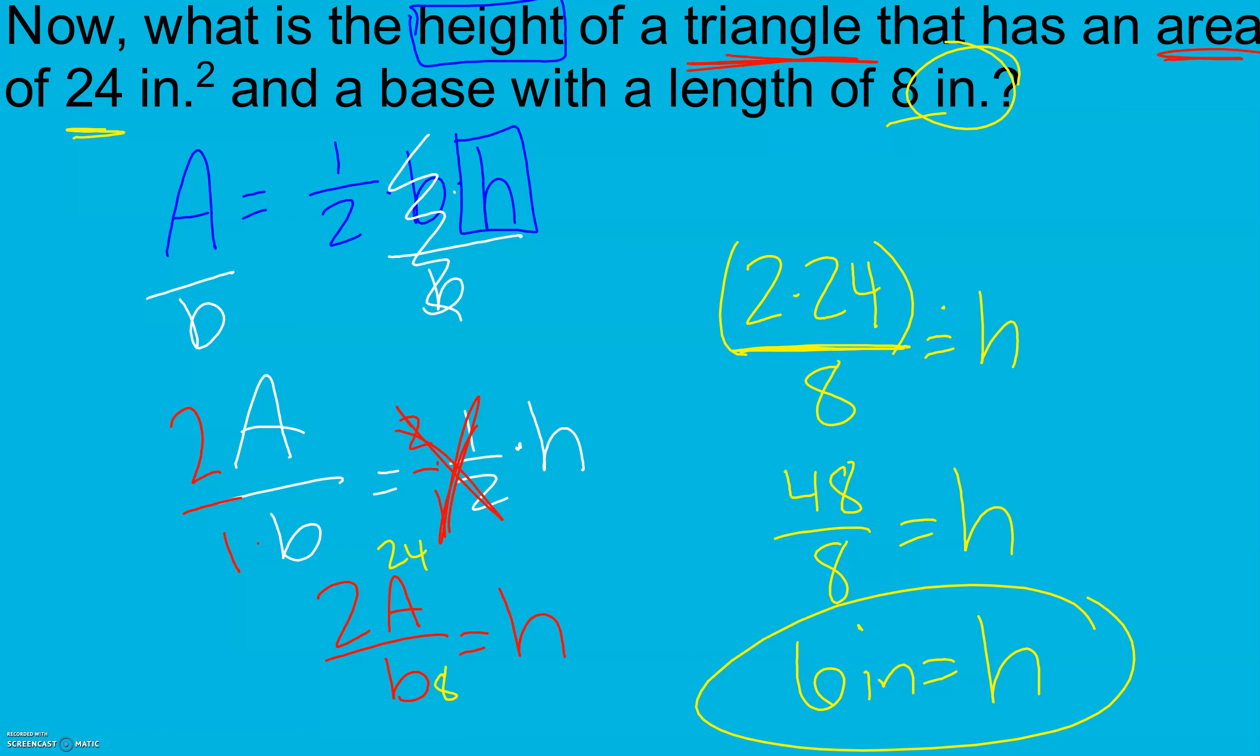We could have also at the very beginning, since it's being multiplied by a half, divided by a half. We just don't like to put fractions in fractions if we can avoid it. But we still would have gotten to the same spot if I'd have taken half times 8, gotten 4. 24 divided by 4 still gets me to 6. So that would have worked as well. Wouldn't have been wrong, just would have looked a little messier.